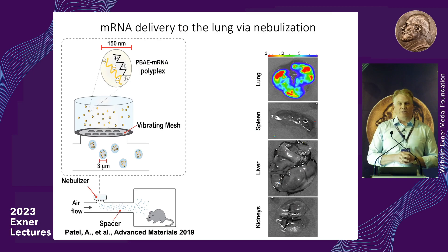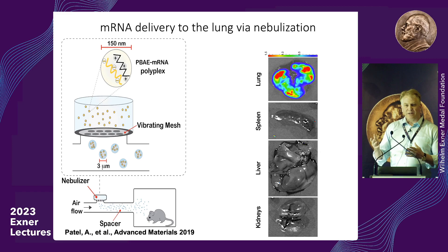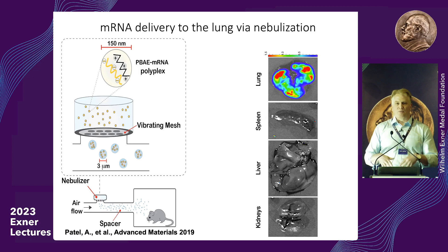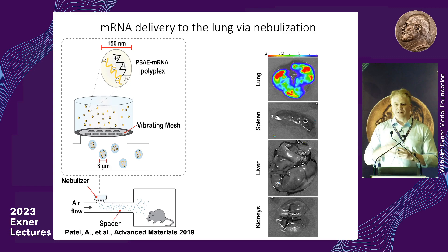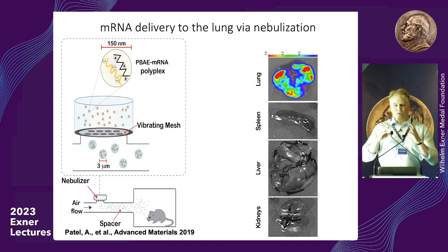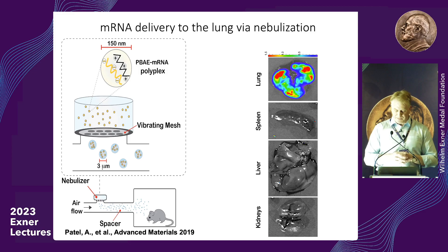Another example is delivery through inhalation. We made nanoparticles that, when breathed in, will deliver messenger RNA. We use a process called nebulization — a solution of nanoparticles creates little water droplets, similar to how a nebulizer delivers albuterol for asthma. When we do this in rodents, it's really only the lung that provides luciferase activity. The idea is that these could be used to treat genetic diseases like cystic fibrosis or others.